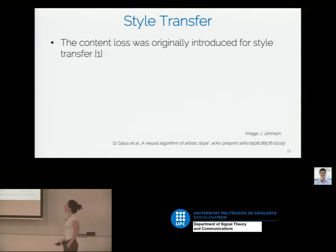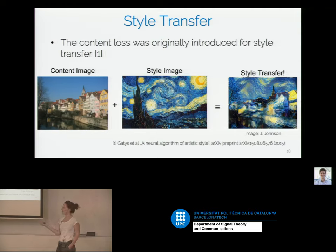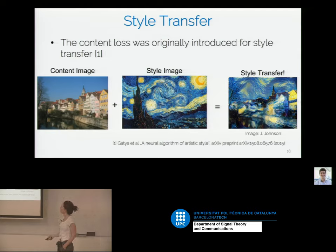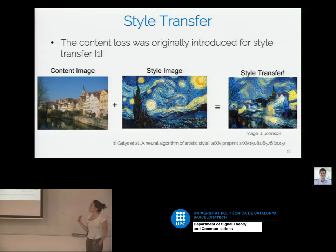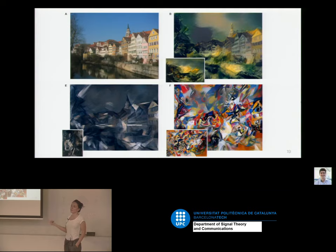The content loss was first introduced for style transfer. Style transfer takes a content image, from which we extract the structure, and a style image, from which we only extract the style. What we want in the end is the content of the first image with the style of the second image. For example, you can see all the shapes of the houses from the first image, but the style has been completely changed according to the second image. We apply the content loss to the content image so we can see similar houses in the generated image. This works pretty reasonably well for some styles; if you take reasonable styles you can get quite nice artistic results, and if you Google for this you will see millions of images with millions of styles.